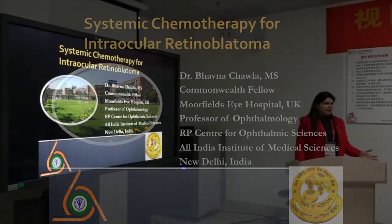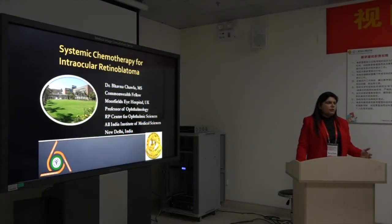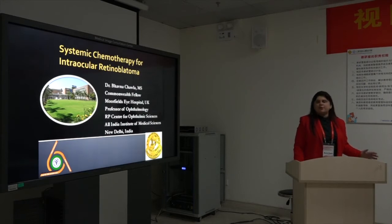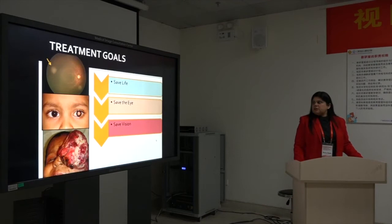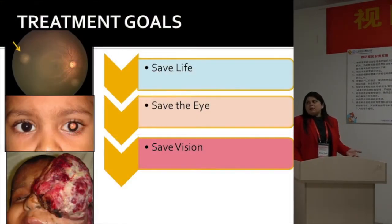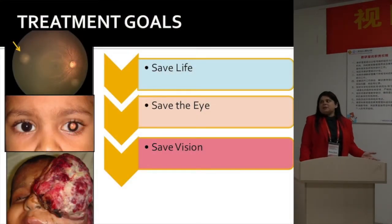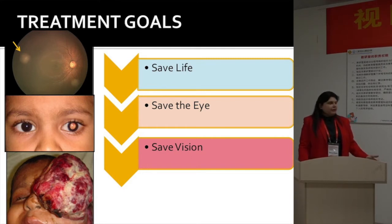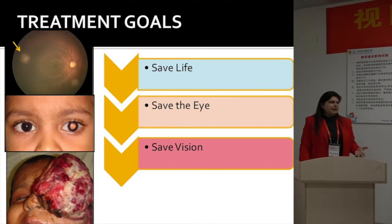What we do in India at our center, also from an ophthalmologist perspective. Systemic chemotherapy for intraocular retinoblastoma has been discussed. The treatment goals for retinoblastoma include saving life, saving the eye, and saving vision as far as possible, in that order.